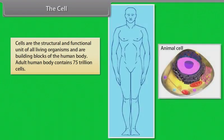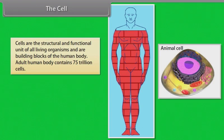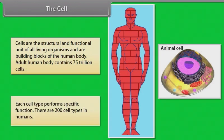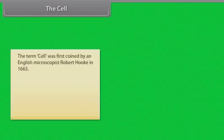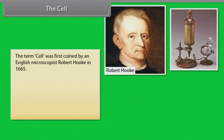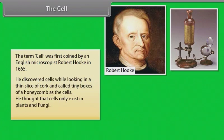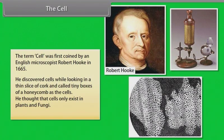Cells are the structural and functional unit of all living organisms and are building blocks of the human body. The adult human body contains 75 trillion cells. Each cell type performs a specific function and there are 200 cell types in humans. The term cell was first coined by English microscopist Robert Hooke in 1665, who discovered cells while looking at a thin slice of cork, calling the tiny boxes of a honeycomb 'cells'. He thought that cells only exist in plants and fungi.